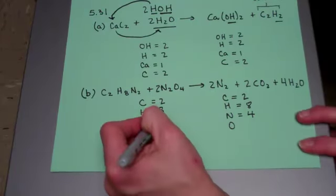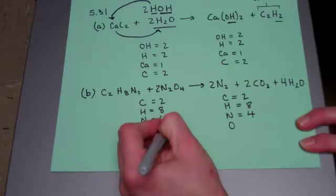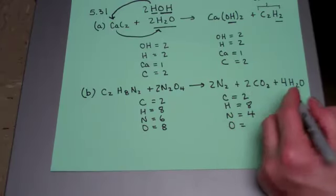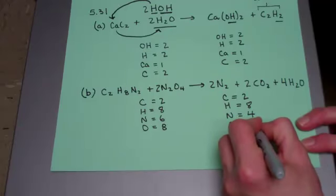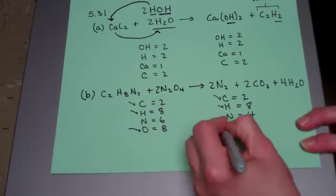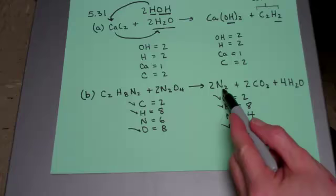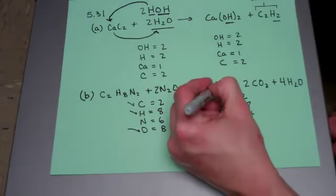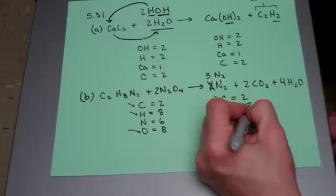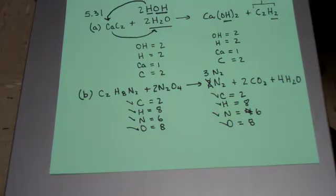Let's count oxygens. There are none in the first compound and eight in the other — two times four — so eight oxygens on the left. On the right, four from carbon dioxide plus four from water gives eight. So everything balances except the nitrogens. To fix that, we just change the coefficient on the nitrogen compound. Instead of two, if we change it to three, two times three gives us six nitrogens on the right — now balanced on both sides.